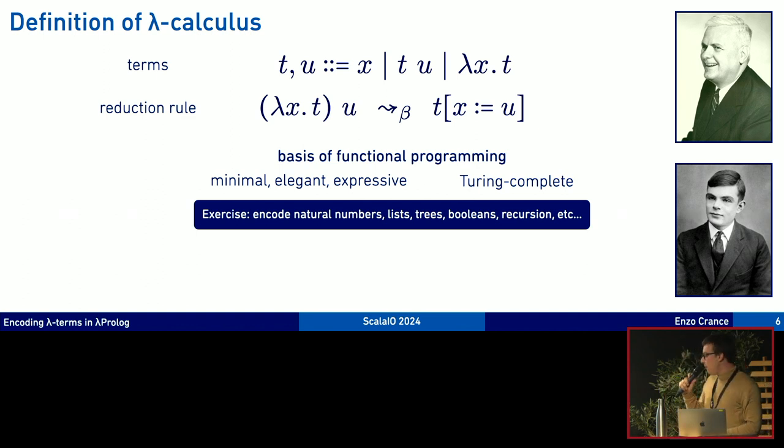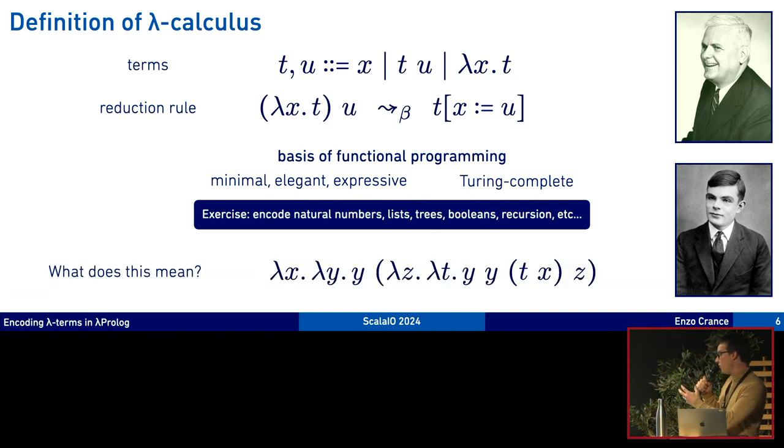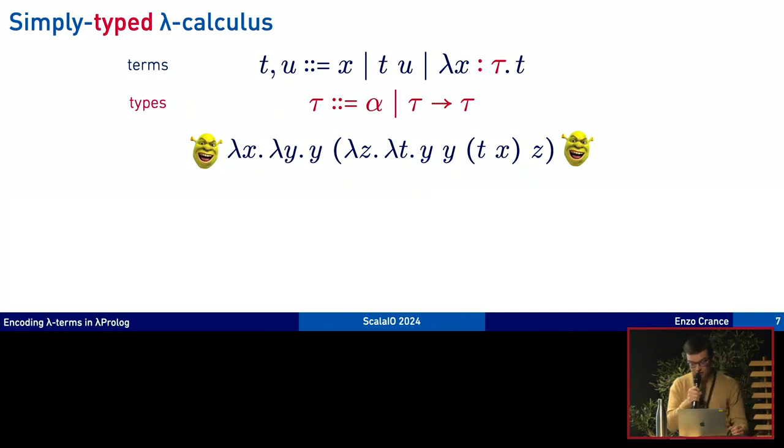The problem with that definition of lambda calculus is that we can write terms for which the meaning is really hard to guess. So a solution to prevent that kind of meaningless terms to appear is to add types. We'll switch to simply type lambda calculus now. We add types in front of the variables in the abstractions. So now lambda x of type tau and then the body T. The types can be simple like variables or arrow types.